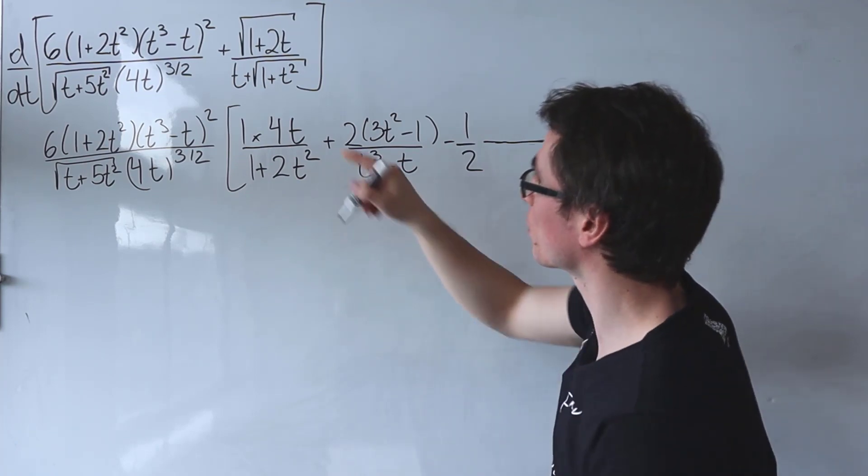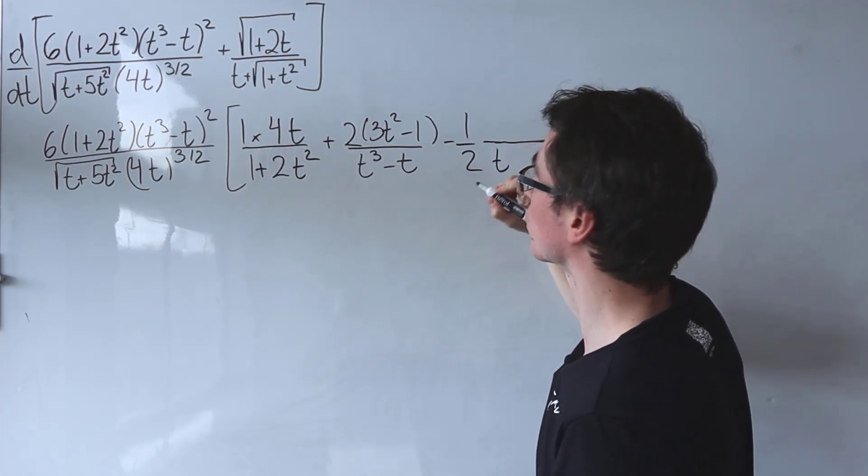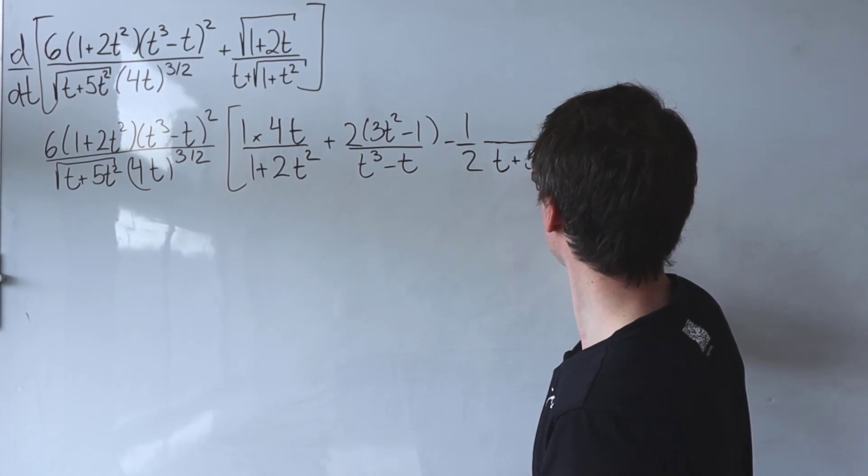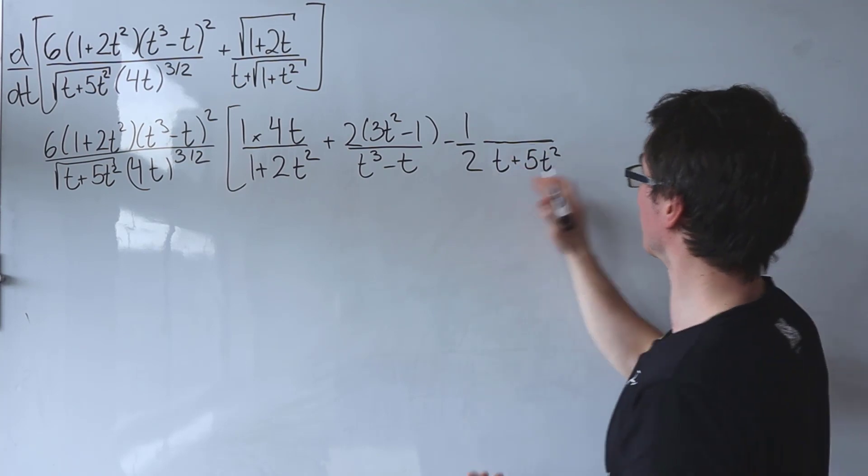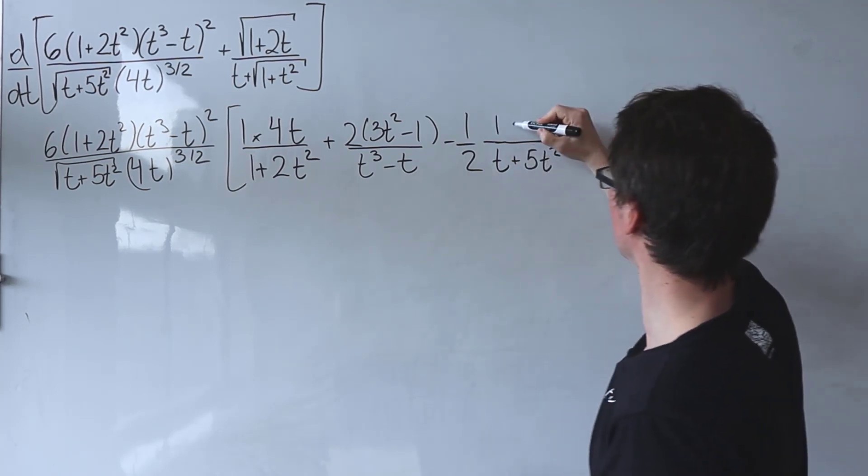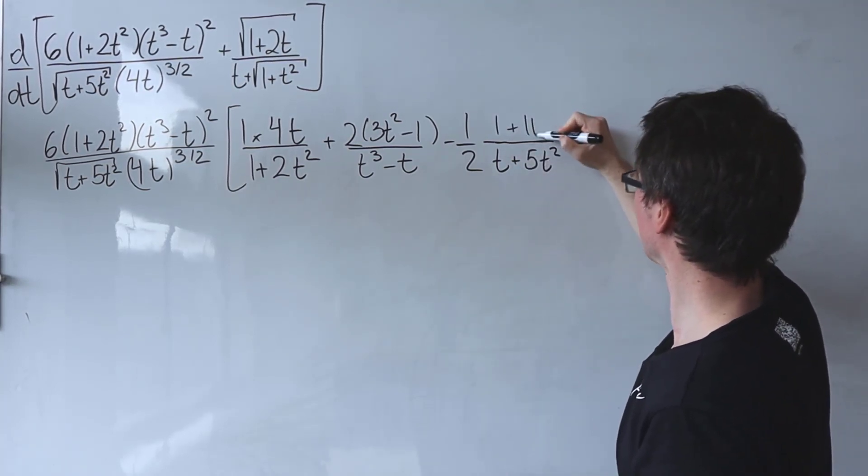Once again, I'm going to divide by the original expression, which is just equal to t plus 5t squared. And at the top here, I'm just going to place its derivative, which will just be equal to 1 plus 10t.